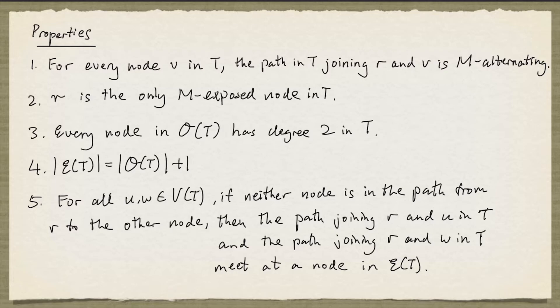Now for the last one, if you take two nodes in the tree, and if neither node is in the path from R to the other node, then you can see that the path joining R and U in T and the path joining R and W in T must meet at a node in the even set. And that's clear because they cannot meet at a node in the odd set, because every node in the odd set has degree 2.